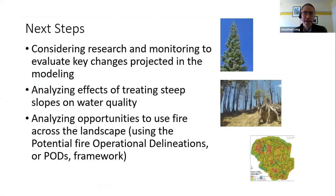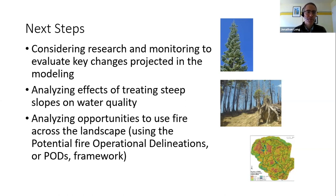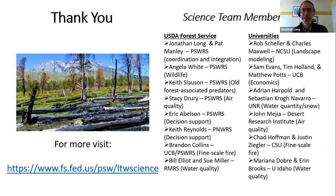For next steps: in addition to continuing to support analysis of impacts for Lake Tahoe West, we're working on research and monitoring needs to evaluate key changes. One observation from the model was that species like red fir are likely to decline with climate change, so more management in the upper montane forest may be needed. We're also analyzing effects of treating steep slopes on water quality, and launching a new effort to analyze opportunities to use fire across the landscape using the Potential Fire Operational Delineations framework — or PODS framework. Thank you very much.